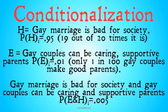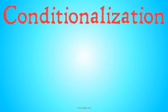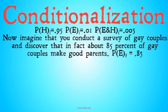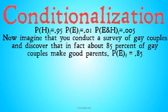Your probability of E and H initial is going to be 0.005 — that is, gay marriage is bad for society AND gay couples can be caring and supportive parents — only 1 in 200 times. Now imagine you read a survey of gay couples and discover that in fact 95% of gay couples do make good parents. So the probability of E final is going to be 0.85 — you reassess your degree of belief in E up to 0.85, based on the exact number in the survey.